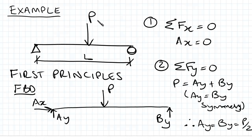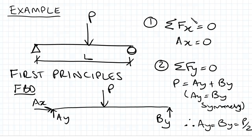So the first thing for this, we've got a point load in the centre at L on 2, for a simply supported beam. We've got AX and AY at the fixed support, and BY at the roller or pin support. The sum of the forces in the X direction are equal to 0, and the sum of the forces in the Y direction are equal to 0, just to maintain equilibrium. So we find AX equals 0, and for the Y direction, P is equal to AY plus BY, and because of symmetry, AY equals BY, so what we find is AY equals BY equals P on 2.